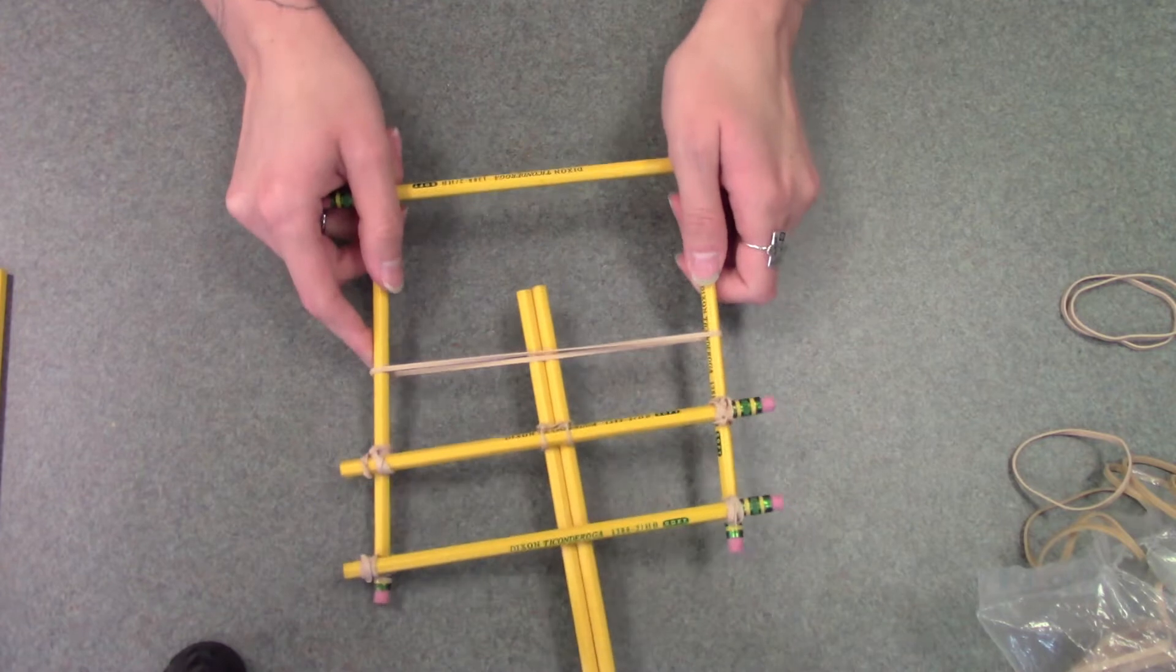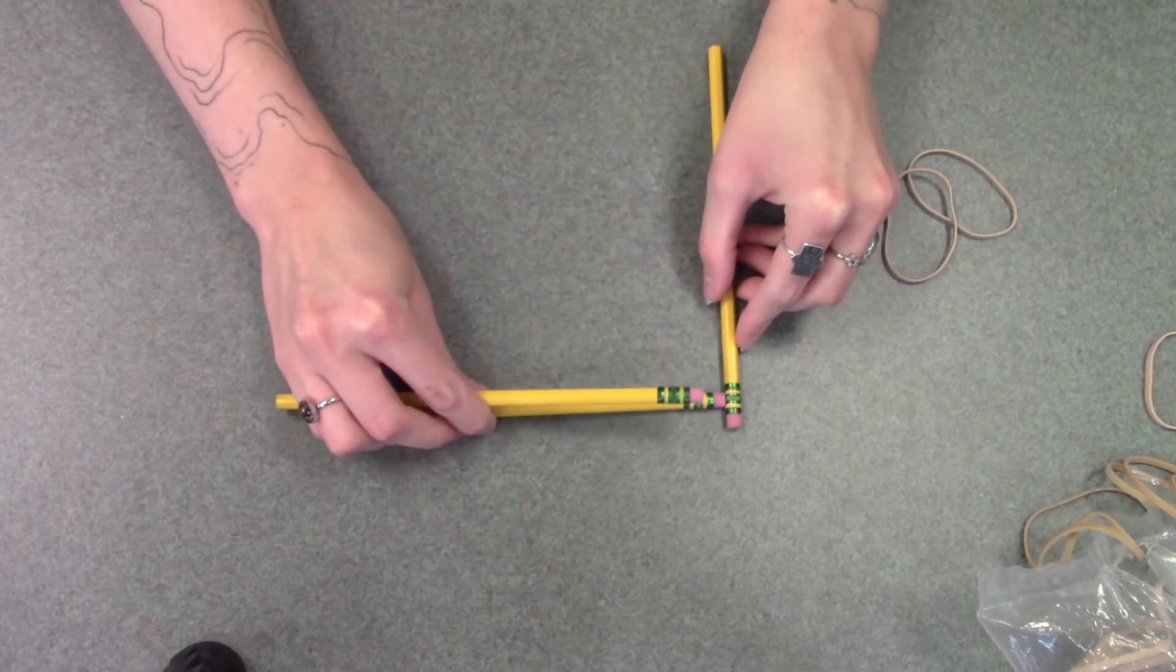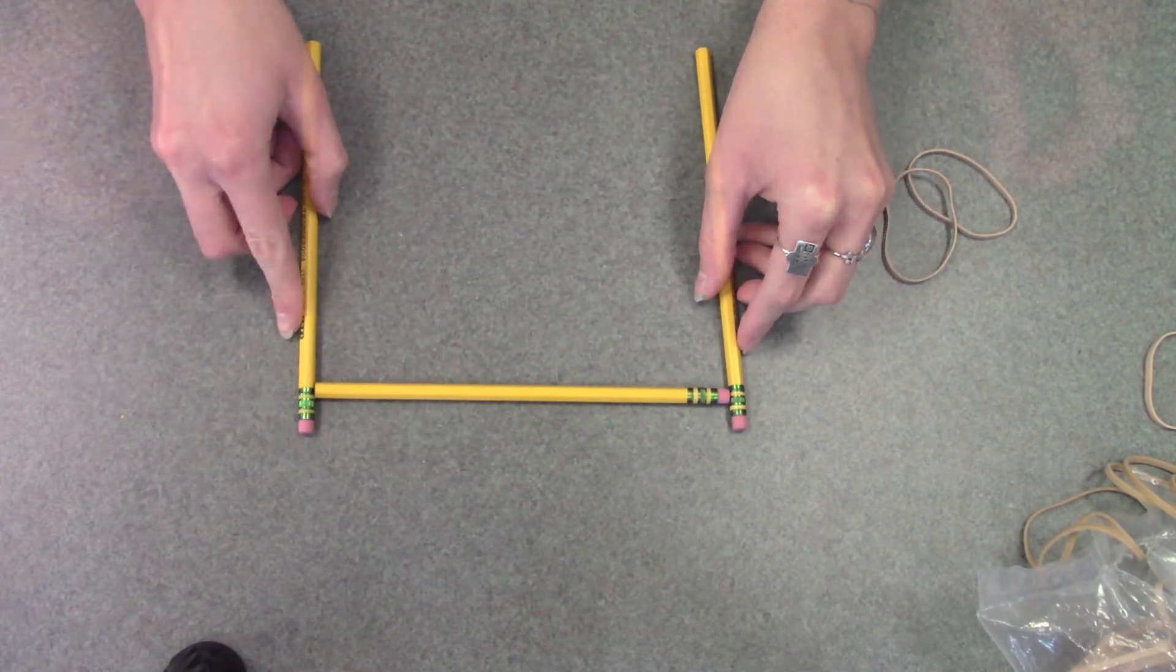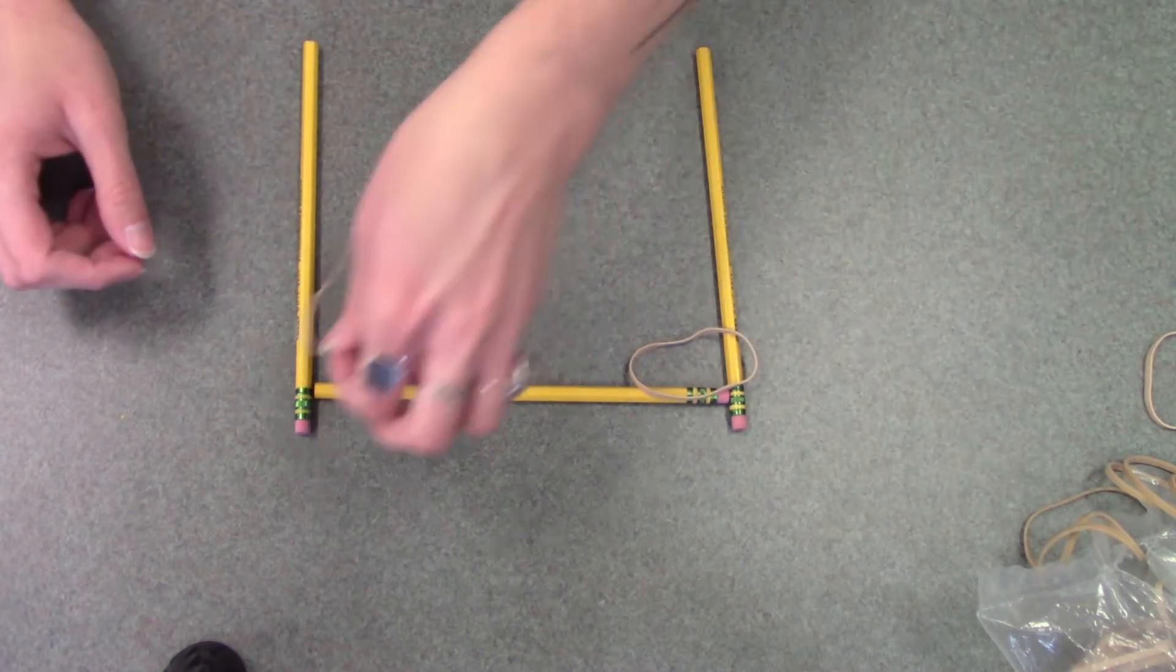Next you're going to set this aside for a second. With three more pencils and two more rubber bands, you're going to connect these like this in an almost complete square, connecting here and here.